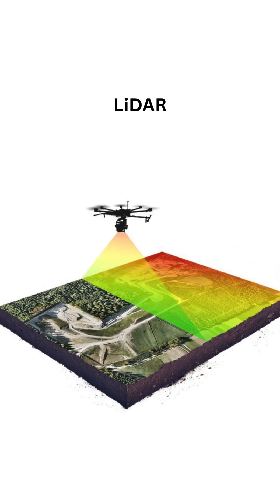LIDAR is a groundbreaking technology that beautifully bridges three-dimensional geometry and physics through the science of light. It works by emitting laser pulses and measuring the time it takes for each pulse to bounce back from its surface. This time of flight is then converted into distance using physics equations — mainly distance equals speed into time. Each measured point becomes a coordinate in 3D space, with an x coordinate, y coordinate, and z coordinate, just like in our maths chapter on three-dimensional geometry.